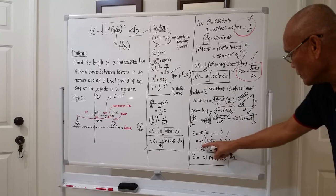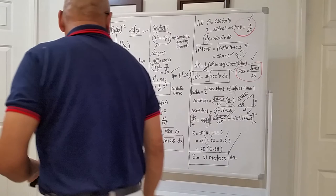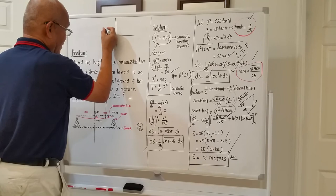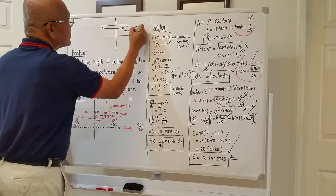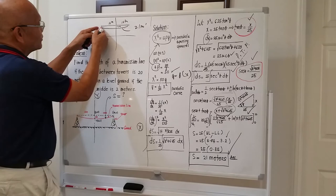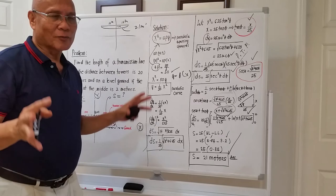So S = 25 × (4.04 − 3.20) = 25 × 0.84 = exactly 21 meters. The total length of the transmission line is 21 meters. The distance between towers is 20 meters, the sag at the middle is 2 meters, and the required length of transmission line is 21 meters — slightly more than the 20-meter span, as expected.